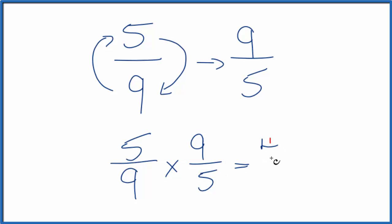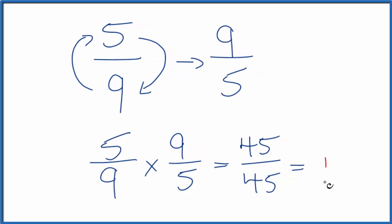Five times nine, that's 45. And down at the bottom here, the denominators, nine times five, that's 45. 45 divided by 45, that's one.